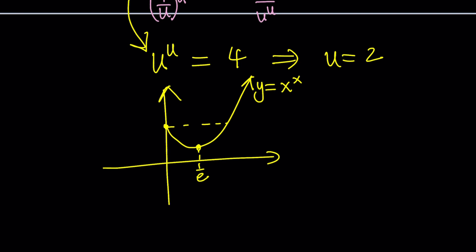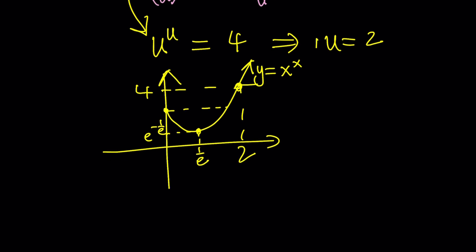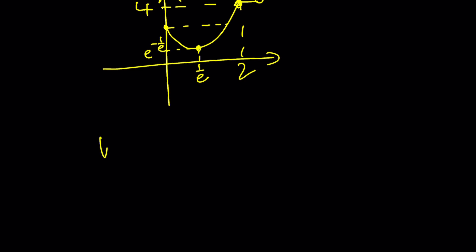And since at 1 over e, we get 1 over e to the power 1 over e, which I believe can be written as e to the power negative 1 over e, since 4 is greater than that, we're going to have a single intersection point, which is going to be at 2. So, u equals 2 is a unique solution. Awesome. So, u equals 2 is the only solution, but what does that give us?